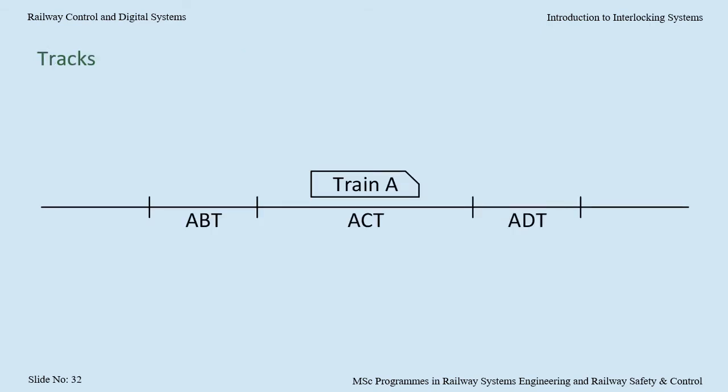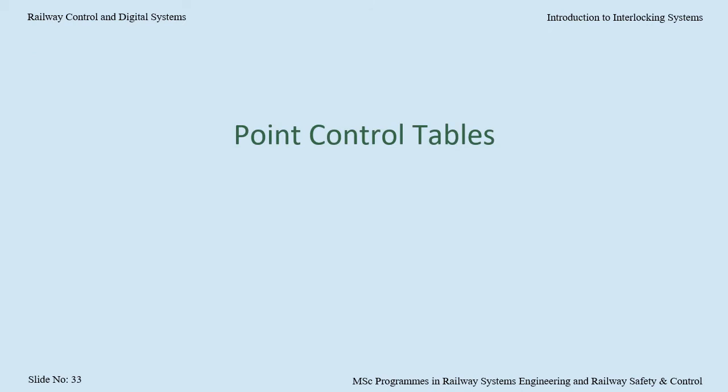Last but not least for concepts and terminology is track sections. Assuming we are using track circuits or axle counters, we divide up the railway into track sections. Each track section — a track circuit or an axle counter section — tells the interlocking whether the track is occupied or clear. Some railways use letters to identify each track circuit. Here we can see that AB track is clear, AC track is occupied by a train and AD track is clear.